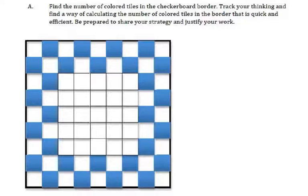Part A. Find the number of colored tiles in a checkerboard border. Track your thinking and find a way of calculating the number of colored tiles in the border that is quick and efficient. Be prepared to share your strategy and justify your work. So there's a few things here. Not only are you trying to figure out how many there are, you're trying to find a way of calculating it that is quick and efficient.